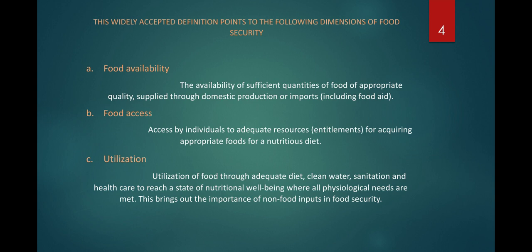Food availability is the availability of food whether it is locally produced, imported from another country, or includes aid that developed countries send to developing countries. Food access refers to access by individuals to adequate resources and entitlements for acquiring appropriate foods for a nutritious diet — essentially the financial resources a consumer holds to buy or acquire food.